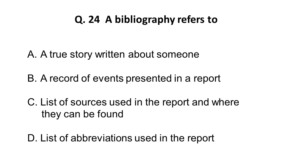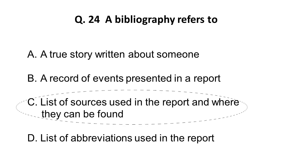Question 24: Bibliography refers to — A) a true story written about someone — that is not bibliography. The correct answer is: bibliography is a list of sources used in a report and where they can be found — their address. So bibliography means a list of sources and their addresses. Remember this.